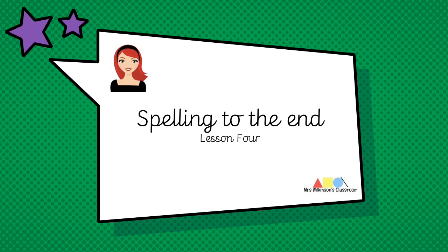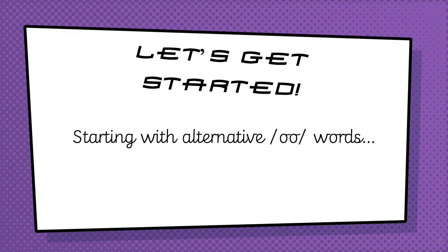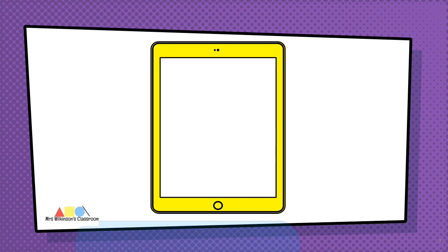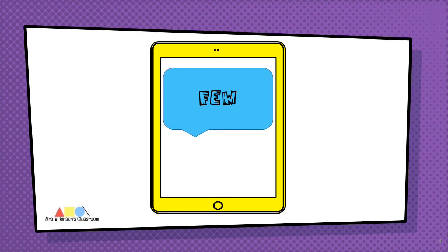Today we're looking at the 'oo' alternative spelling E-W. Let's give these a go. First word: stew. Next word: few.